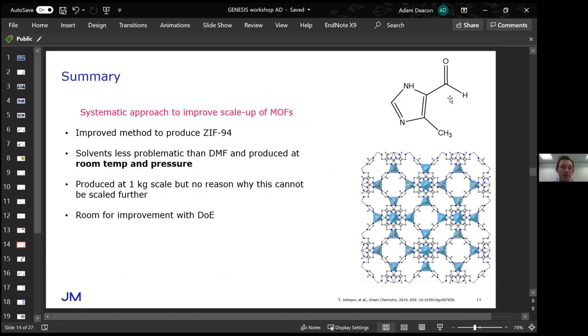Just a quick summary of that work. We managed to improve the method for ZIF-94. We've gone from a solvothermal method using very toxic solvents to room temperature and pressure reaction using methanol and THF which is better than DMF. We've also produced this at one kilogram scale and we don't see any reason why this reaction can't scale further.